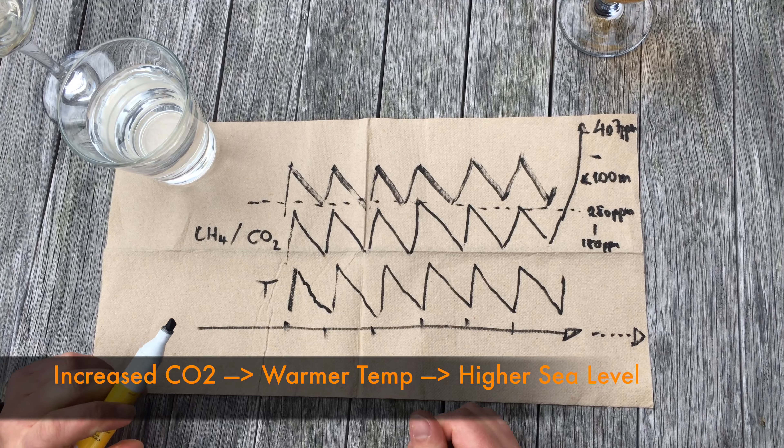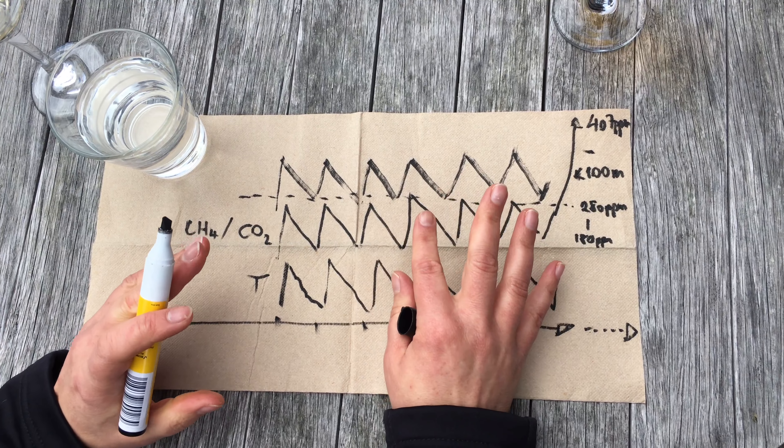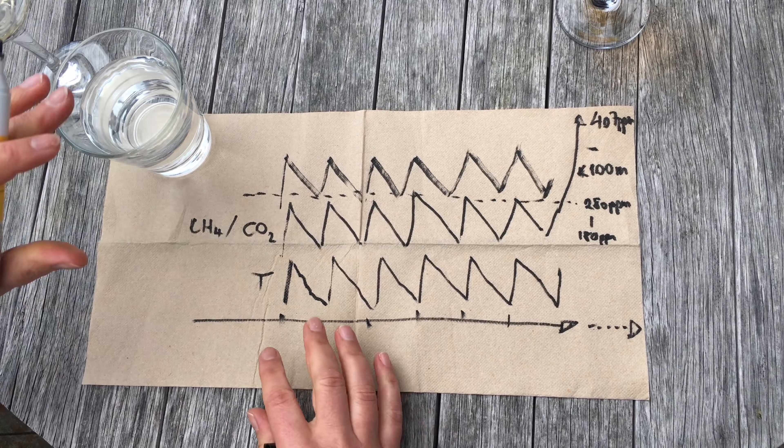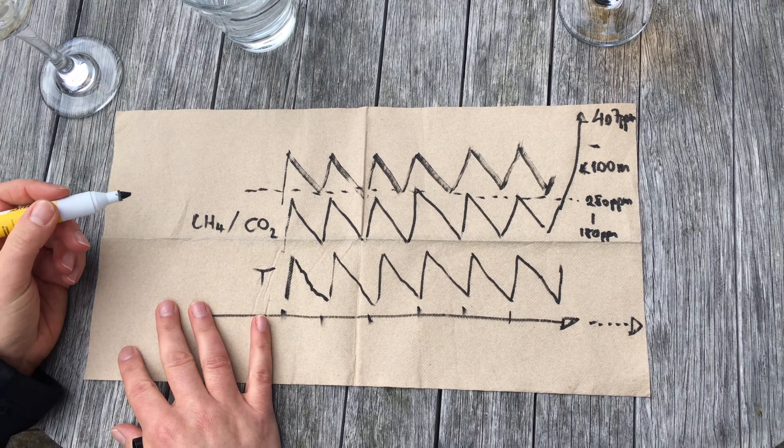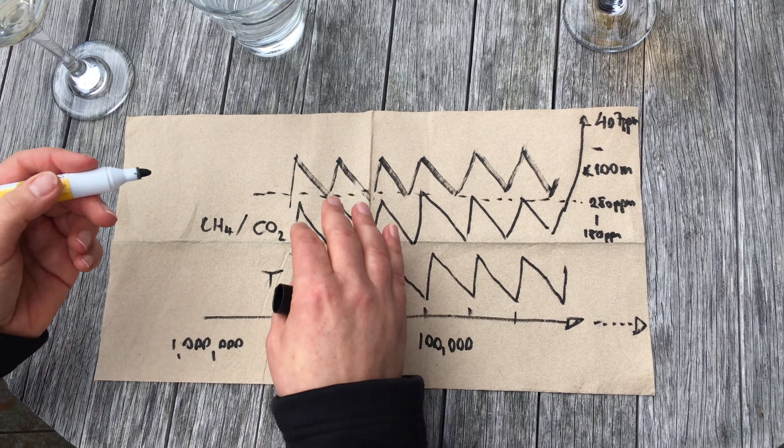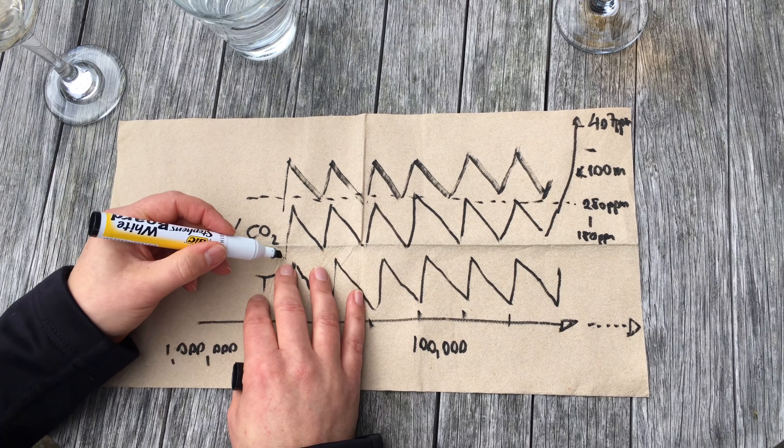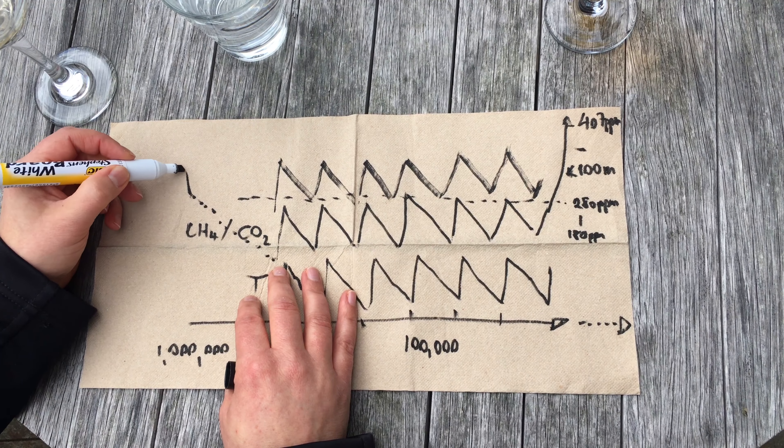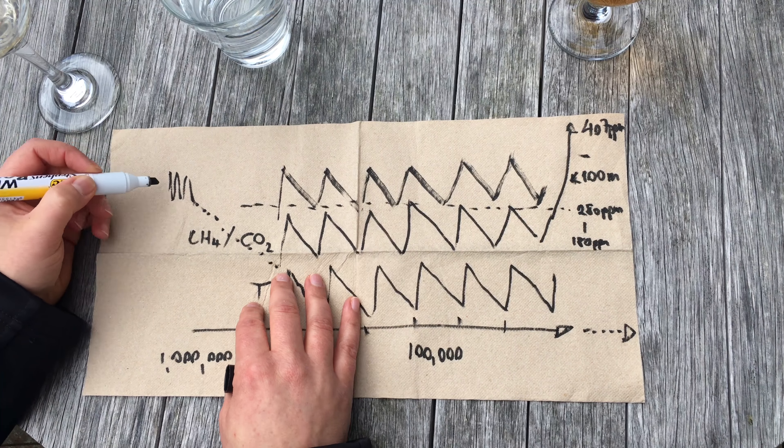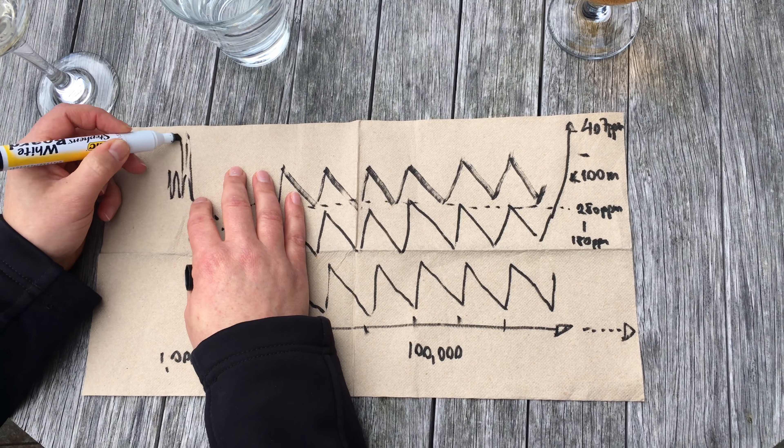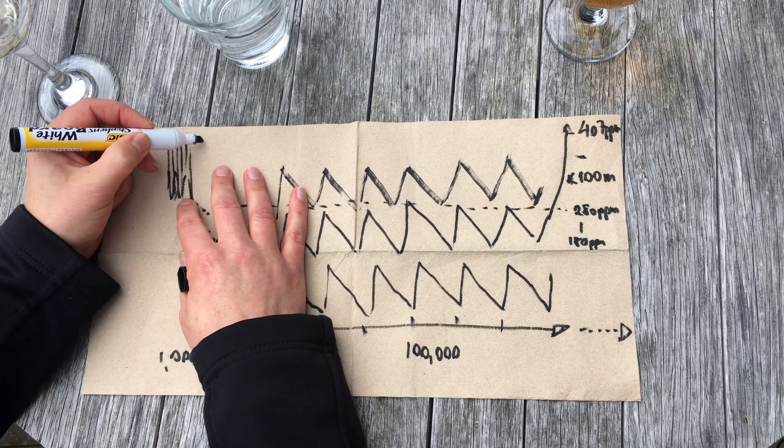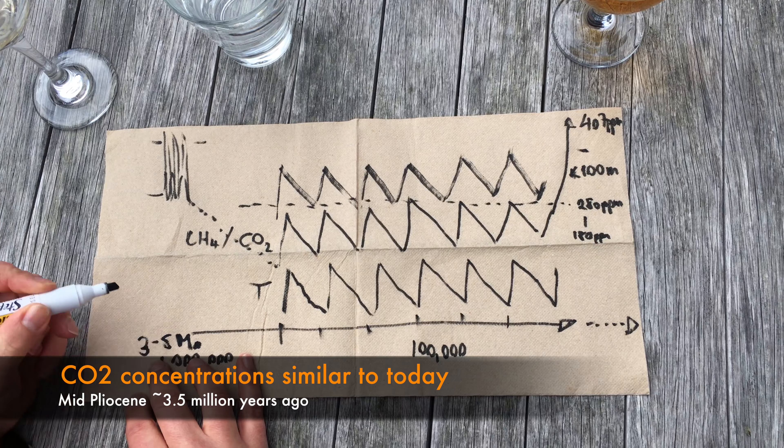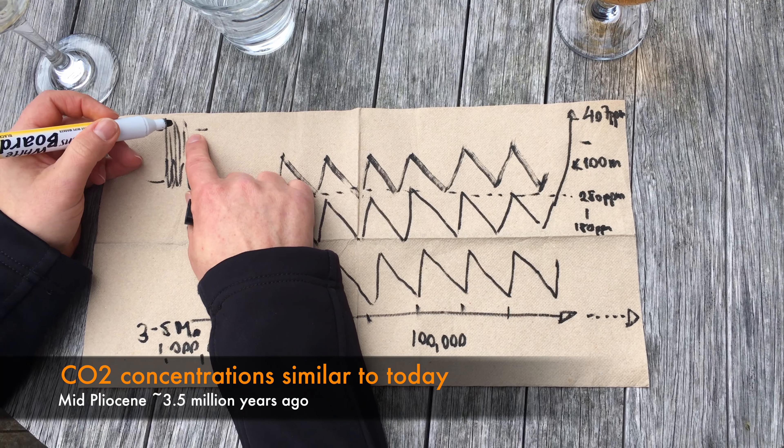This provides us with a means to look into the future. What we can do now is look even further back in time, and this is where geological records become really important. We can go back to times where CO2 actually was much higher. We have a period that we call the mid-Pliocene where CO2 concentrations were actually 400 ppm, as they are right now.